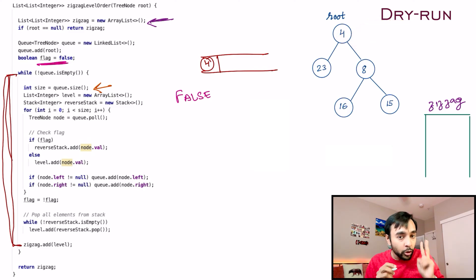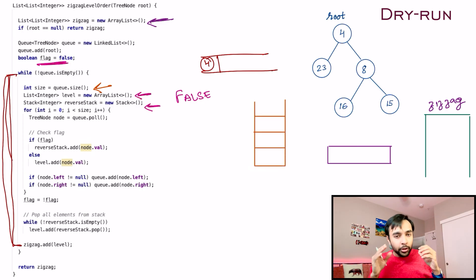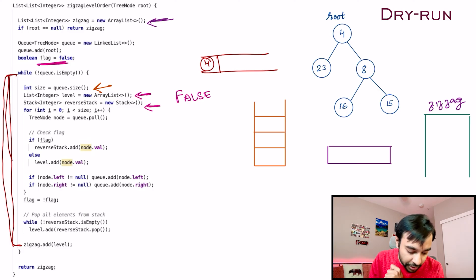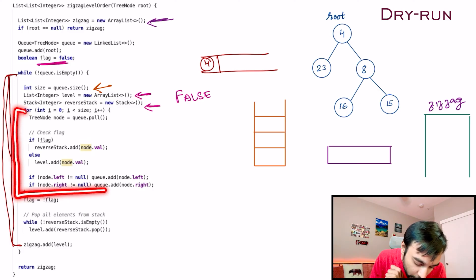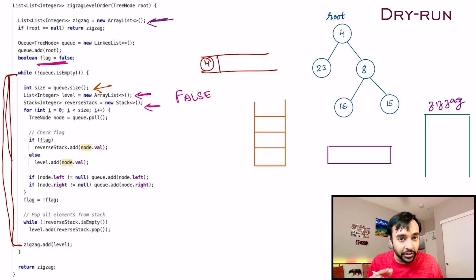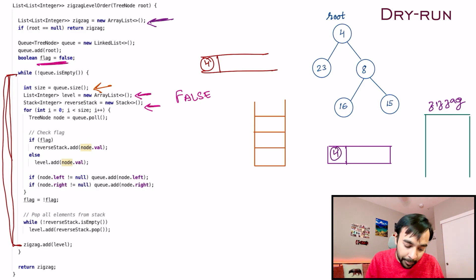We create two more data structures: a level list and a stack. You only use one of them based on your flag value. Right now the flag is false, so you run a for loop, pop an element from your queue, and look at its children. Since flag is false, you do not use your stack — simply write down 4 in your list.